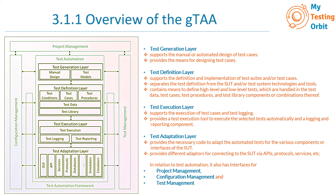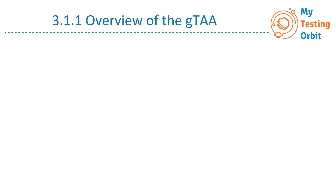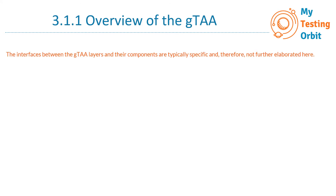All these layers in the architecture are separate, but at the same time they need to be integrated to ensure maintainability and scalability of our test automation platform. The interfaces between the GTAA layers and their components are typically specific to each product, and that is why they are mentioned generically here rather than in much detail.